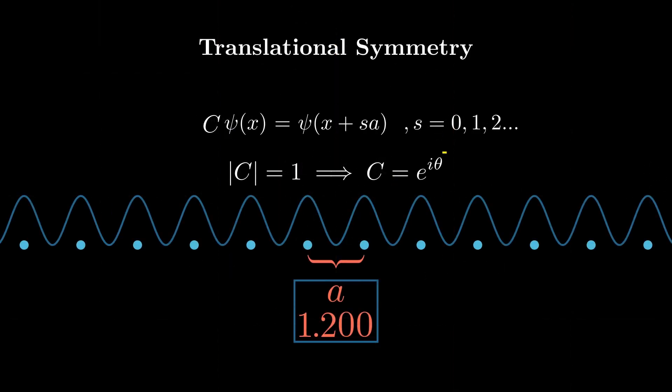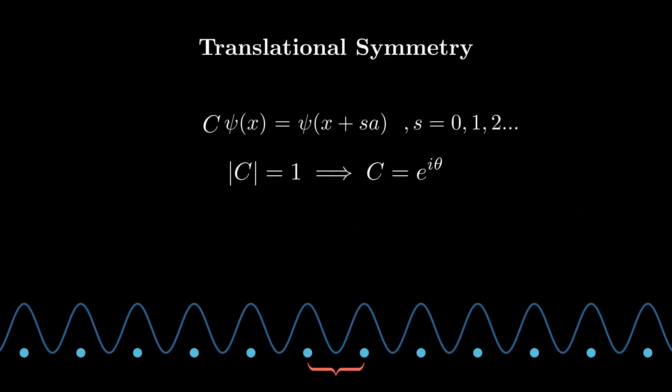Okay, let's return to our original equations now. We've found what theta is, and we know that c must be equal to e to the 2 pi i s over n, where s ranges from 0 to n minus 1, because n would be the same thing as 0. Then psi of x plus s a equals e to the i 2 pi s over n times psi of x.